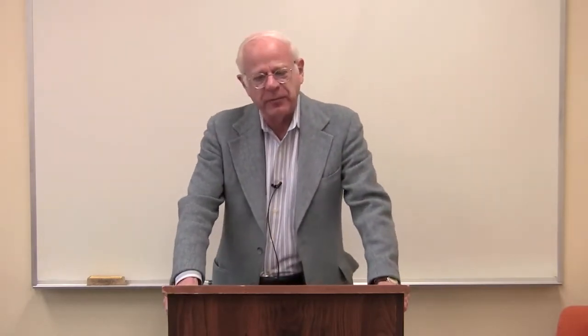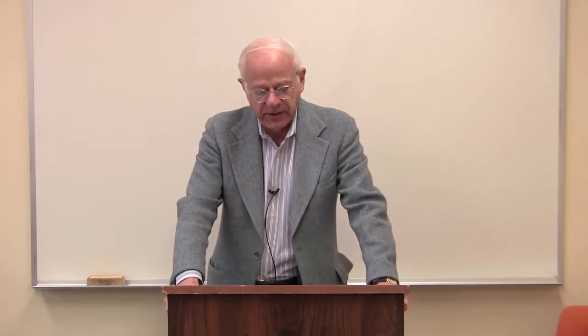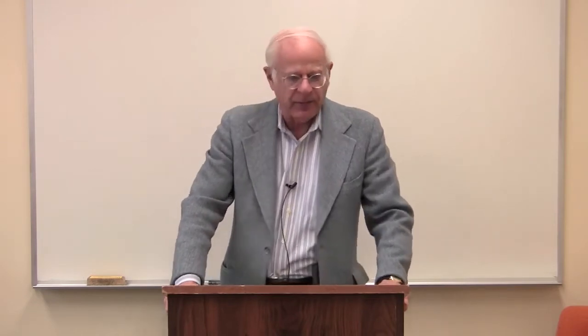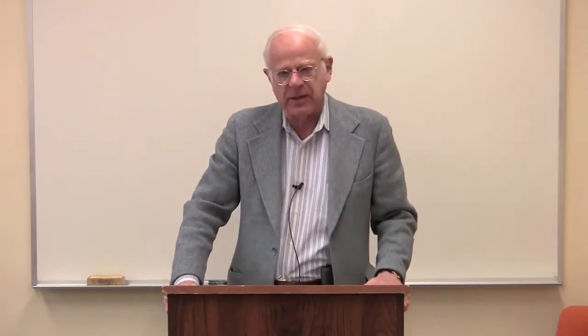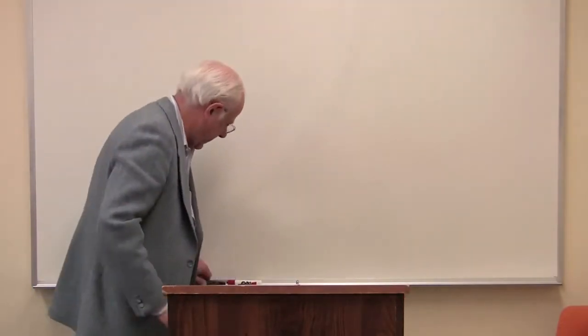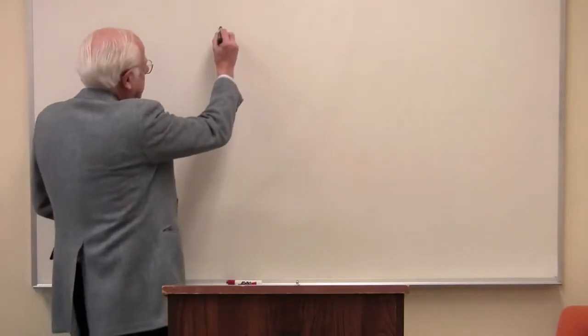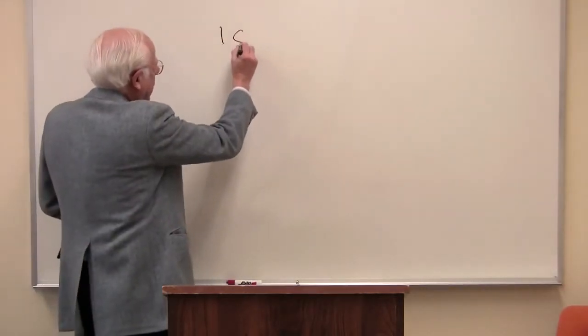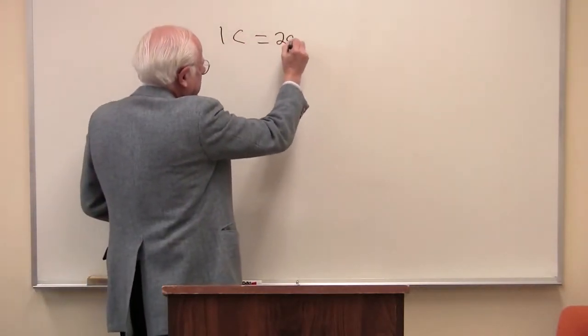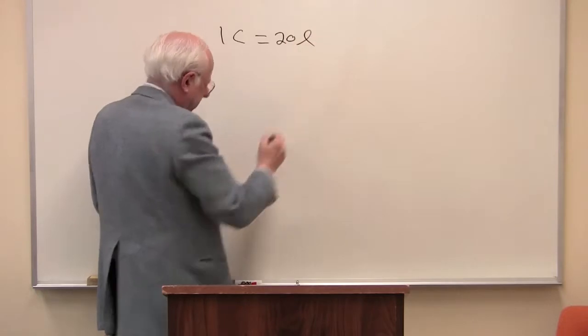Marx begins by discussing the relationship between different kinds of commodities. He discusses, as you will read, one coat equals 20 yards of linen. And let me put that on the whiteboard here: one coat equals 20 yards of linen.